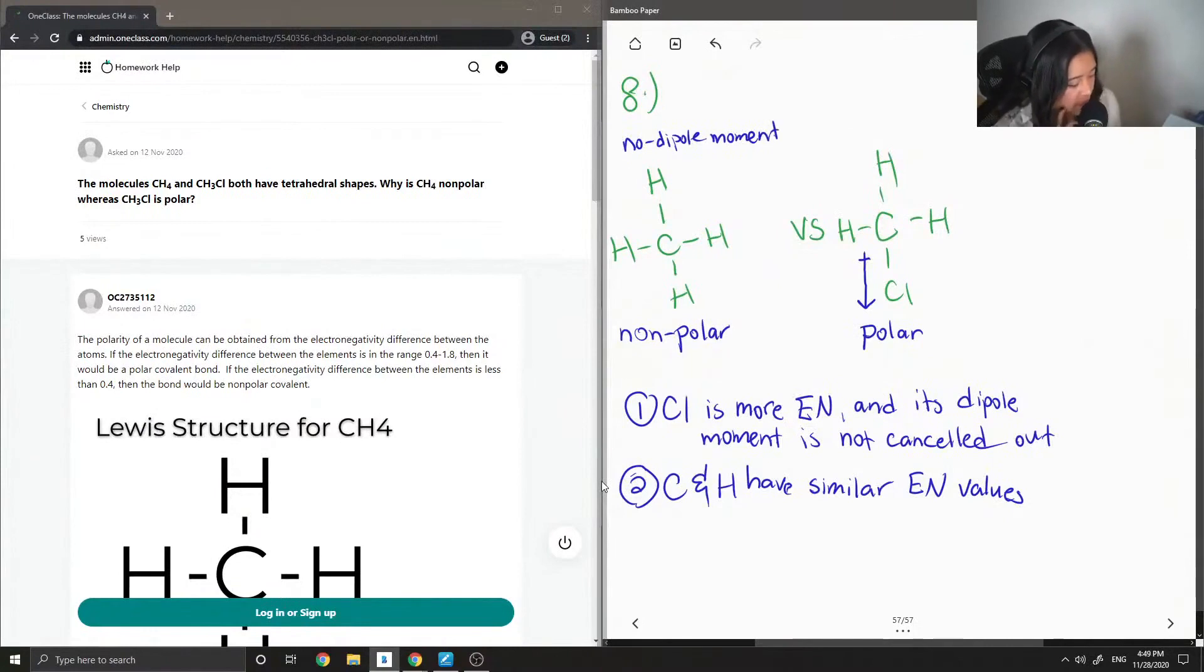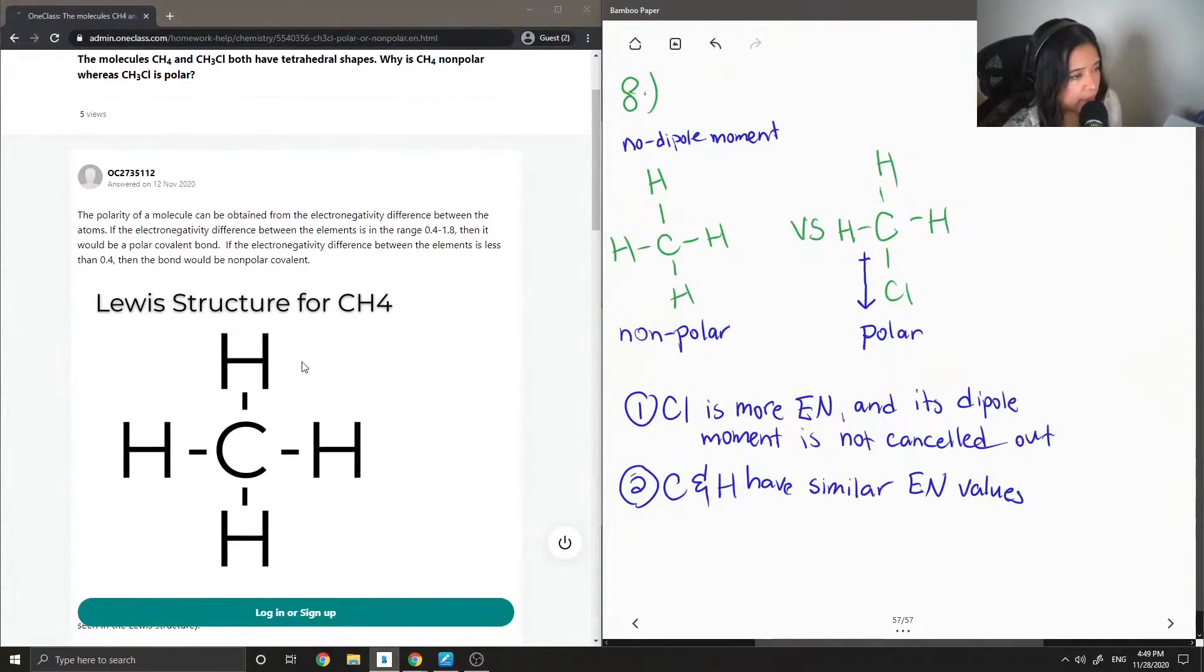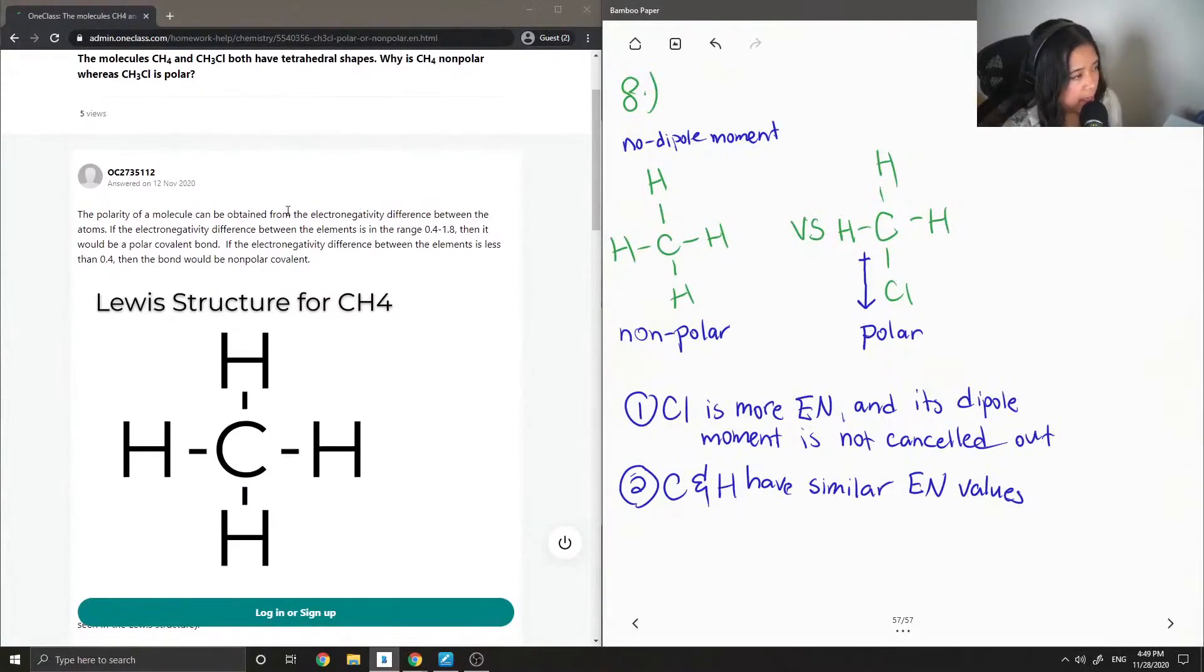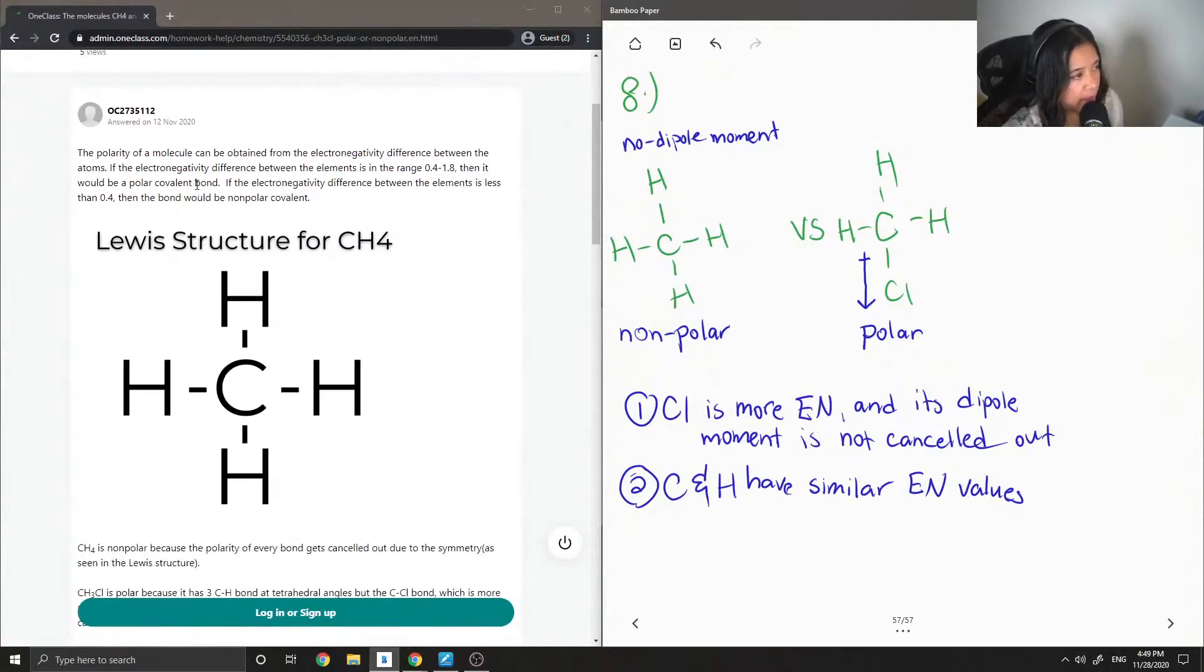Okay, let's see what the tutor said. Polarity of a molecule can be obtained from the electronegativity difference between the atoms. If the electronegativity difference is in the range 0.4 to 1.8, then it would be a polar covalent bond.